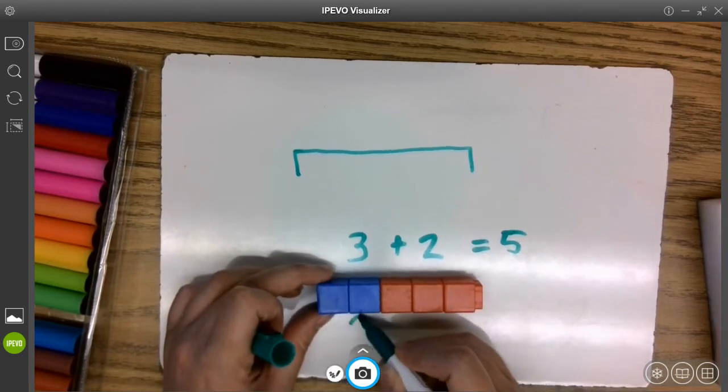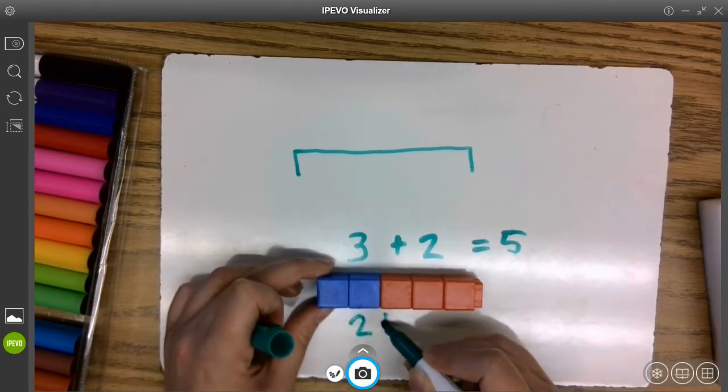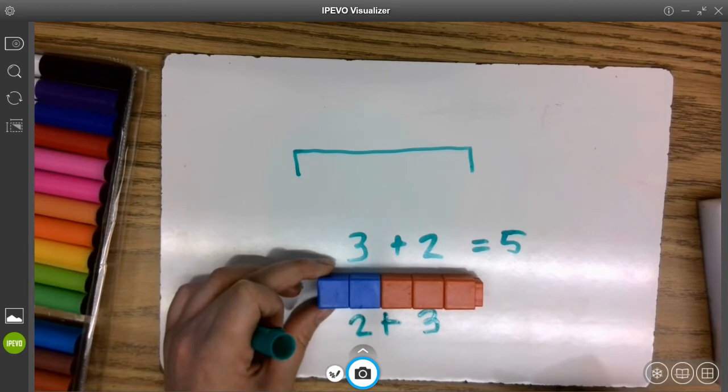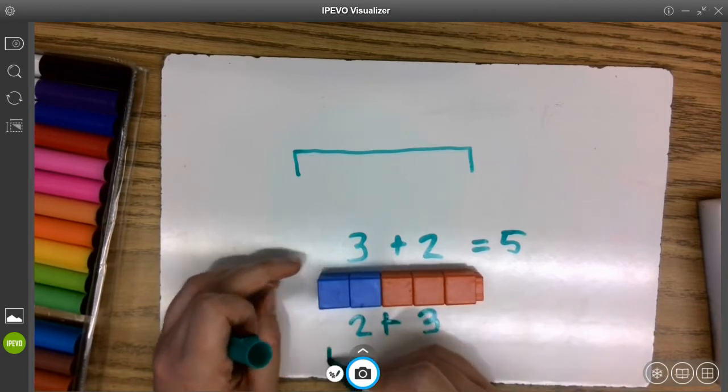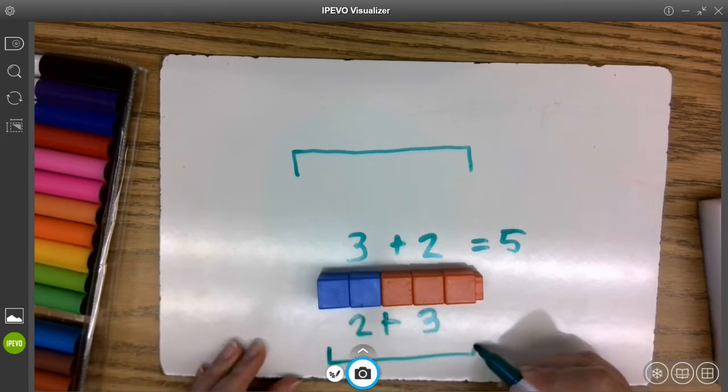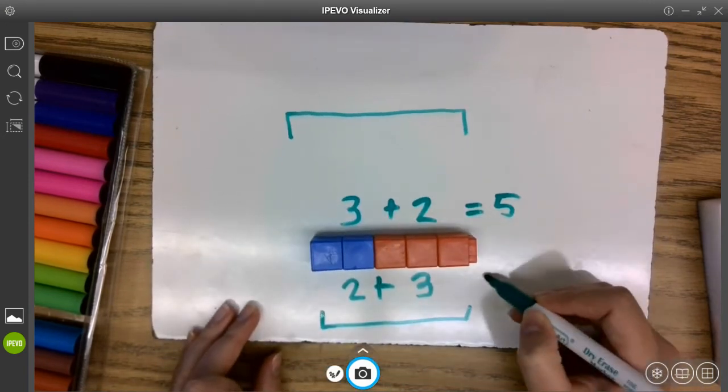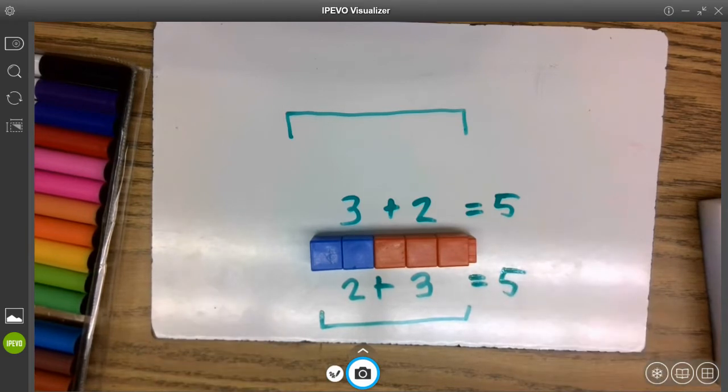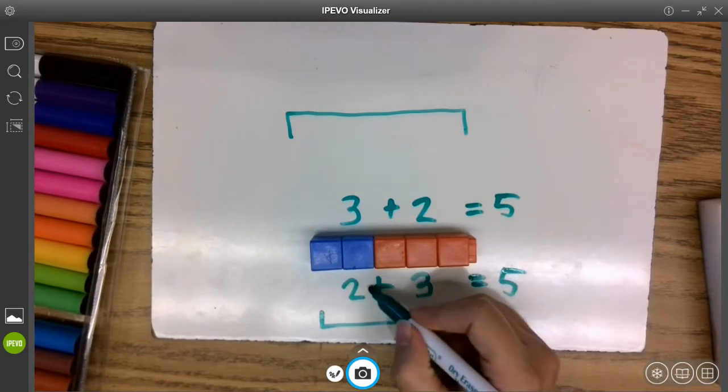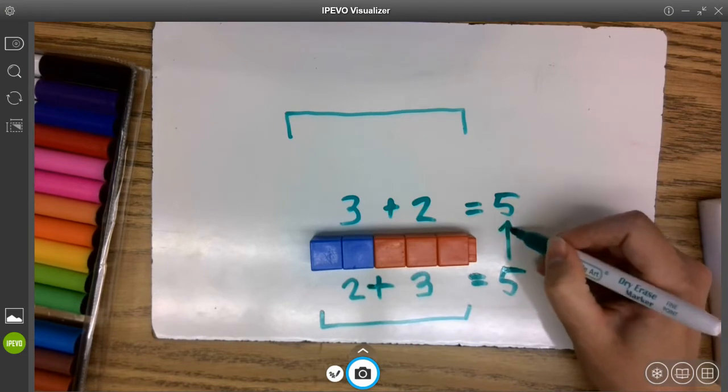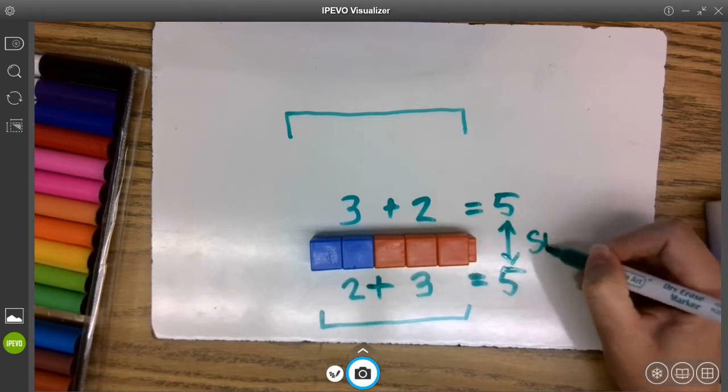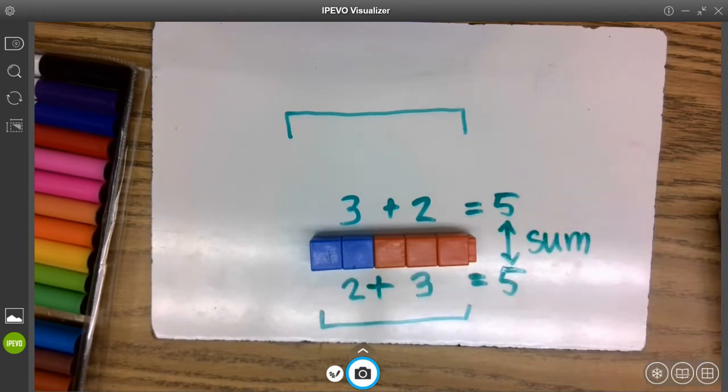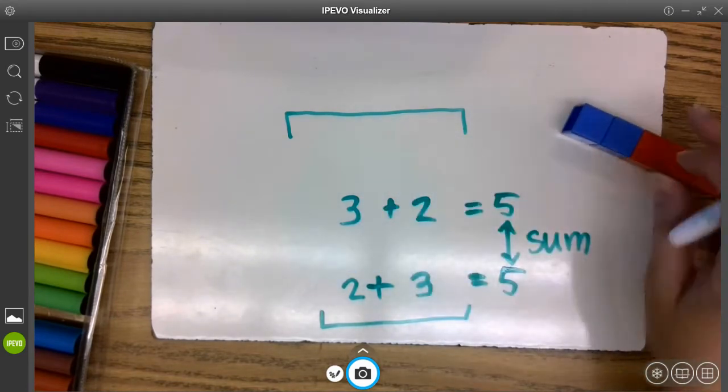But what has stayed the same? From beginning to end, I still have five cubes. My sum stays the same no matter which order my addends are in.